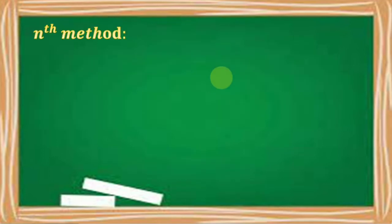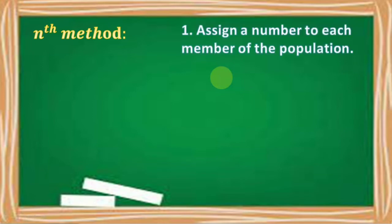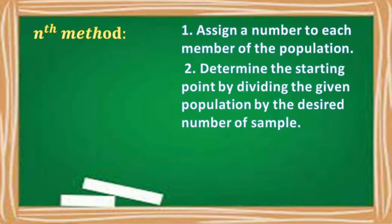Let us list down the steps in the nth method. Number one, assign a number to each member of the population. Number two, determine the starting point by dividing the given population by the desired number of sample.